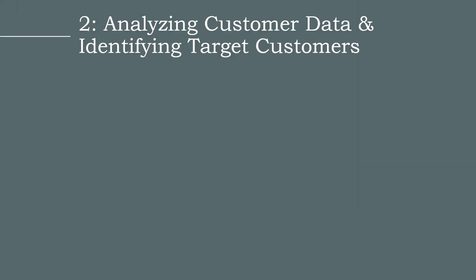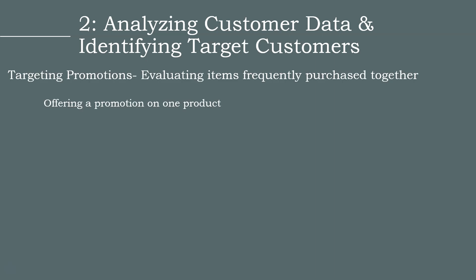A second analysis is a technique called targeting promotions. This involves looking at what items are commonly purchased together using the information from the market basket analysis, and then offering a promotion on only one of those items. In targeting promotions, retailers offer a promotion on one of the items that would usually be purchased together, but not on both. By offering a discount on one item, retailers can encourage you to buy the other item, even if you don't need it now.